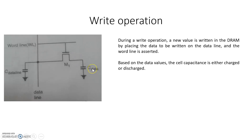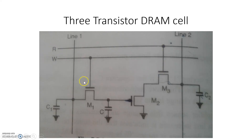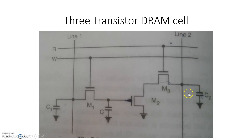Now we look at the three-transistor dynamic RAM with transistors M1, M2, and M3. The read line is connected to M3, the write line is connected to M1, and M2 is between M1 and M3. Capacitor C1 is connected to line 1 and capacitor C2 is connected to line 2.